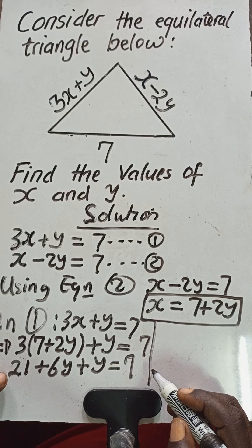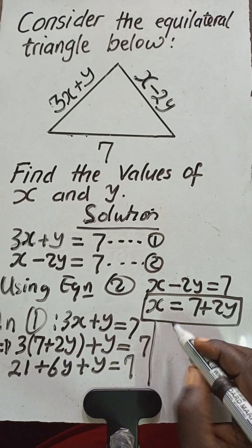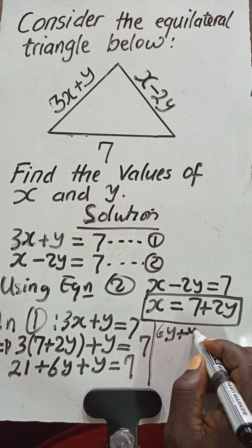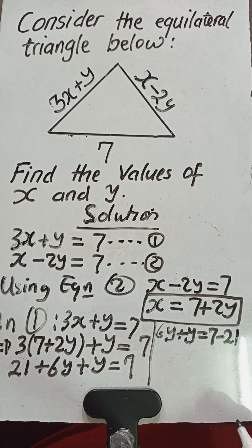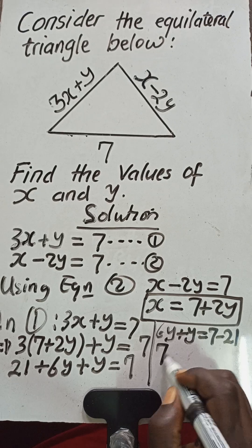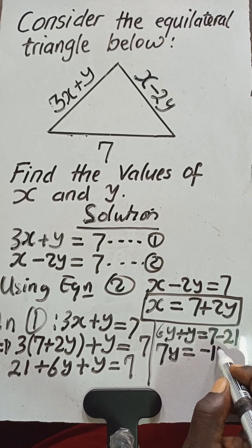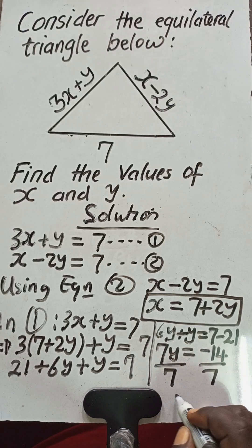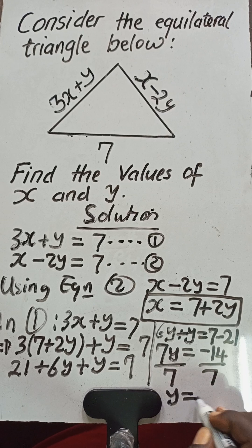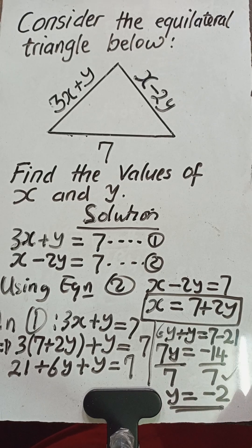Taking 21 from the left-hand side to the right-hand side, we get 6y plus y equals 7 minus 21. That gives us 7y equals negative 14. Dividing both sides by 7, we get y equals negative 2. That is the value for y.